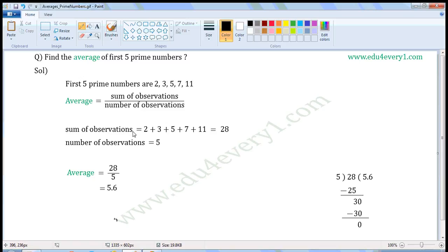Sum of observations means we have to add these numbers: 2 plus 3 plus 5 plus 7 plus 11. When we add these numbers, we get 28.